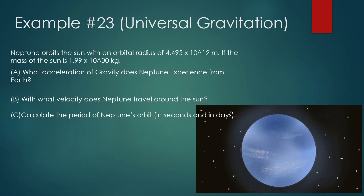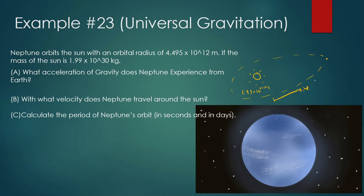Let's look at example number 23. Neptune orbits the Sun with an orbital radius of 4.495 times 10 to the 12 meters. The mass of the Sun is 1.99 times 10 to the 30 kilograms. We draw the Sun and Neptune way over there since Neptune is further out. Mass of Sun: 1.99 times 10 to the 30 kilograms. Orbital radius: 4.495 times 10 to the 12 meters.